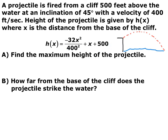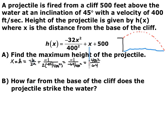It's in standard form, so go ahead and pause the video and find the maximum height of this projectile. To find the x-coordinate of our vertex, I use negative b over 2a, where b is 1 and a is −32/400². I simplified and ended up with x = 400²/64. This is the horizontal distance in feet where the maximum occurs. Go ahead and pause the video and find the actual maximum height.